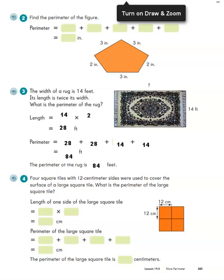So hopefully you're starting to see that there are lots of strategies to find perimeter, but all it basically is, is finding the distance around the outside of a shape. And then let's look at number four.